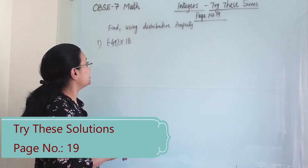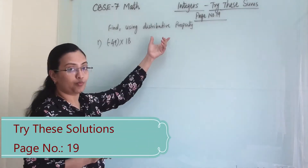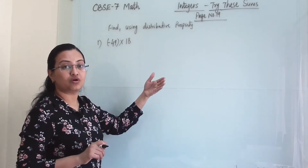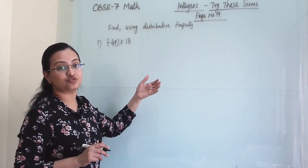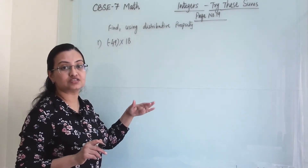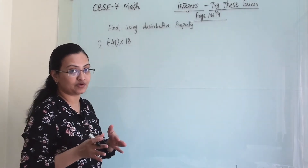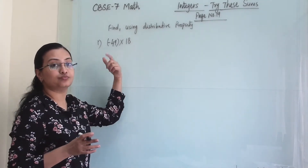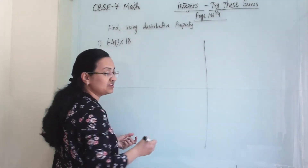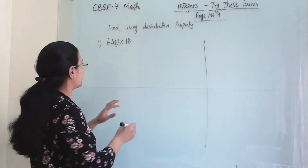We have to find these numbers according to the distributive property. Earlier we have seen and solved some examples based on the distributive property of integers over addition and over subtraction. Here we can use both properties — first we will see with addition and then with subtraction.